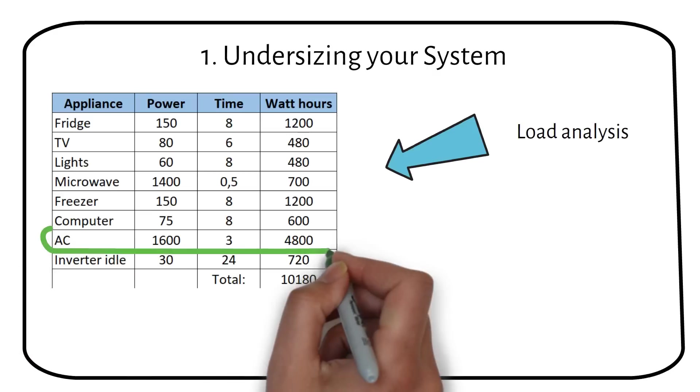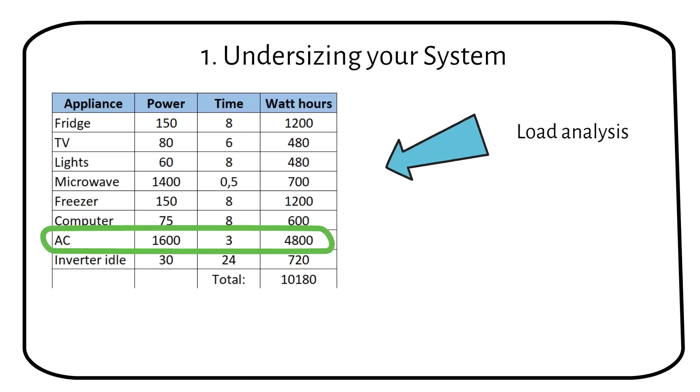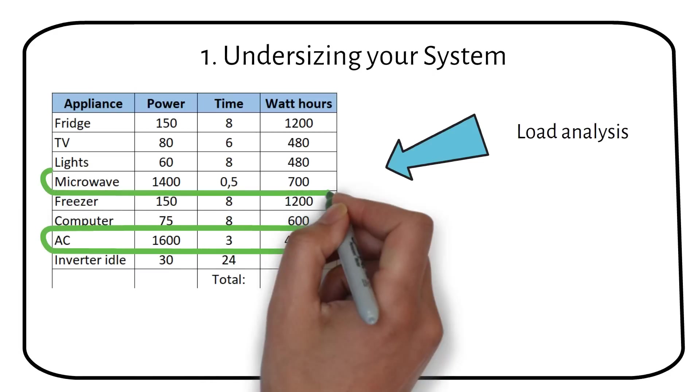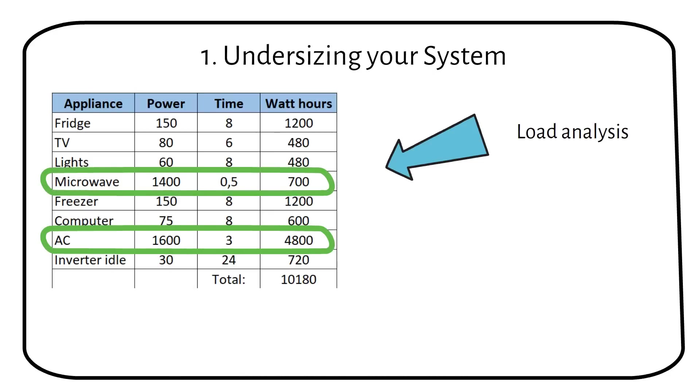if you have an AC unit that consumes 1600 watts and a microwave that consumes 1400 watts and you plan to run both simultaneously, your inverter should handle at least 3000 watts plus the surge power.